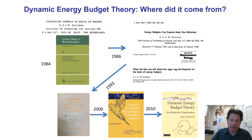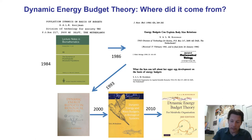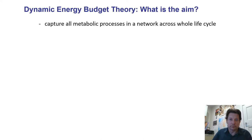A book was produced in 1993 describing the ideas and concepts, with a couple more editions adding new ideas. The latest book is the 2010 edition, which describes the full theory. So what is the point of DEB theory? The idea is to capture all the metabolic processes in a network across the whole life cycle of the organism — not just one aspect like growth, but the whole network of things going on and how they change dynamically through the life cycle.